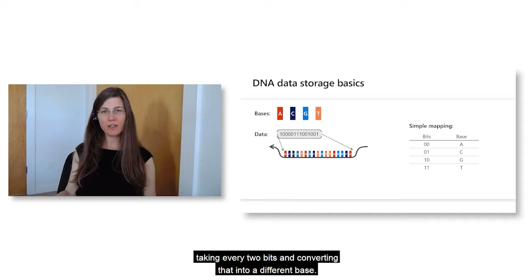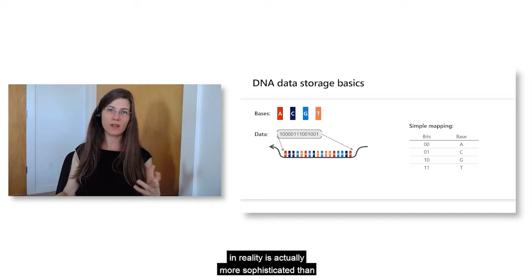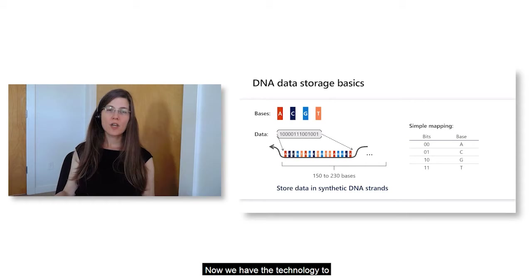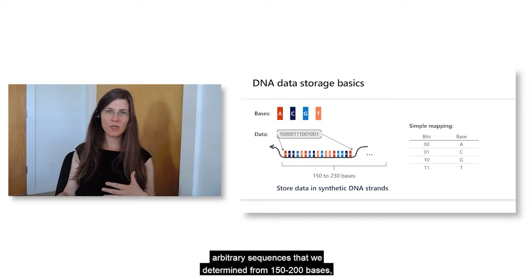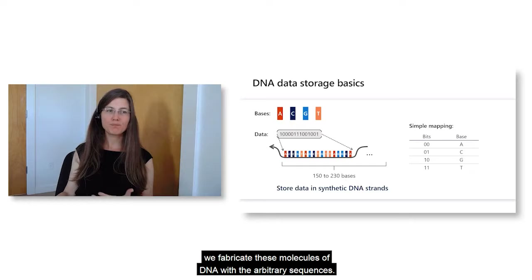Here I'm showing a simple mapping where we take every two bits and convert that into a different base — so 00 corresponds to A, 01 to C, and so forth. The mapping we use in reality is more sophisticated, but this illustrates that we can translate bits to bases. We now have the technology to produce these molecules in arbitrary sequences of 150 to 200 bases. We fabricate these DNA molecules with arbitrary sequences to store the information.